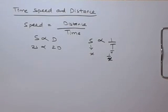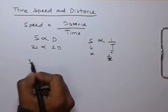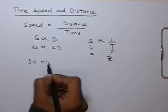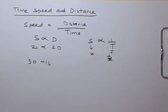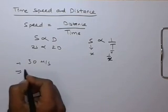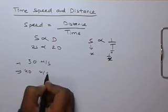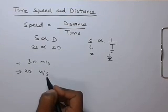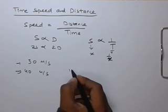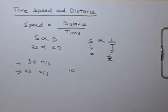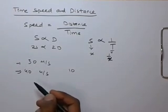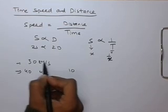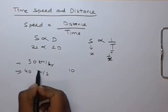Suppose a person who is going to office generally with the speed of 30 meter per second. Suppose one day he goes by the speed of 40 meter per second. So we will take it as kilometer per hour, it will be more useful.